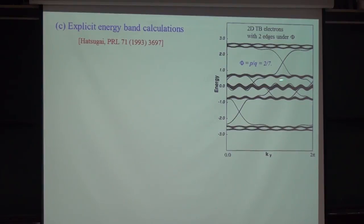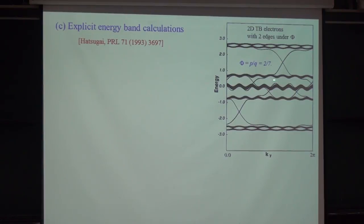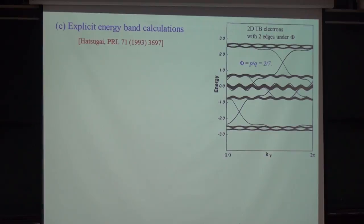One important feature is that this metallic edge state is dissipationless, because it has only one way to go and no way to turn back. So in principle, quantum Hall effect can not only be used to measure fundamental constants, but also for low-power electronics.